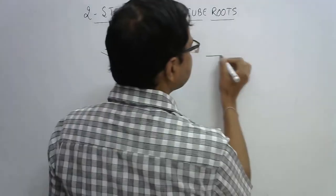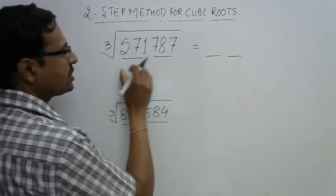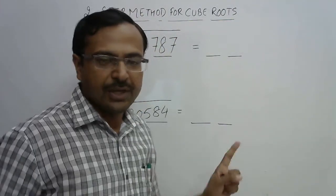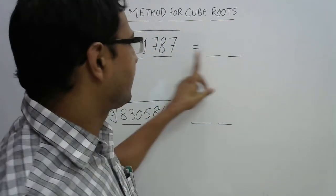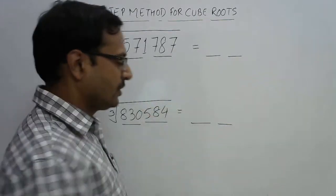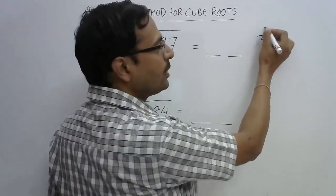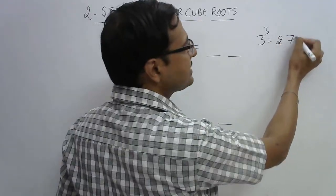So our answer will be a two-digit number because there are two triplets. The unit digit of this answer will end with 3. Why? Because 3 cube is 27, and 27 ends with 7.